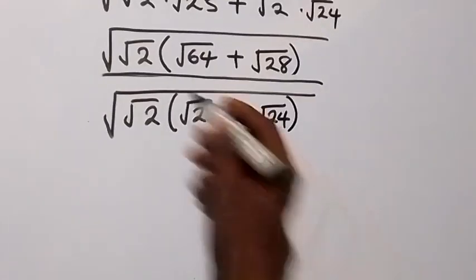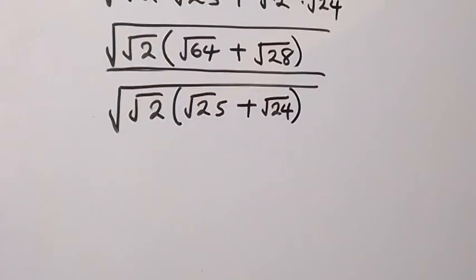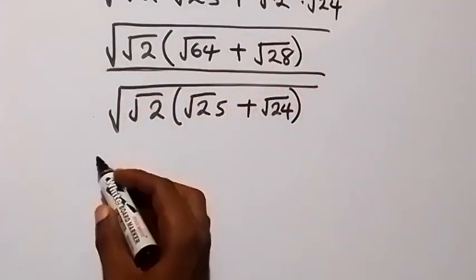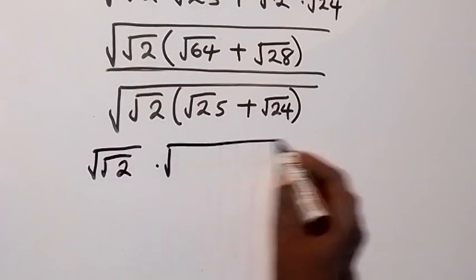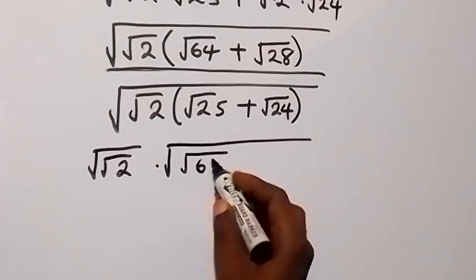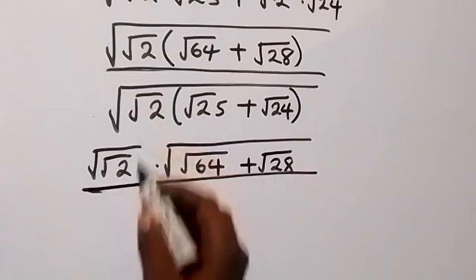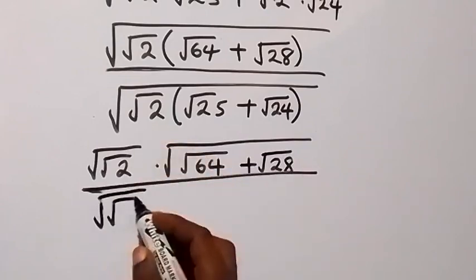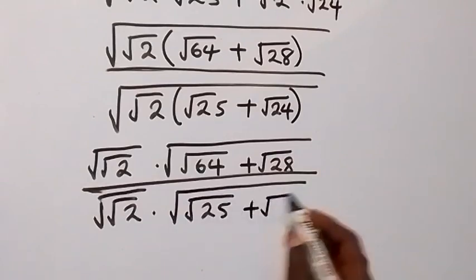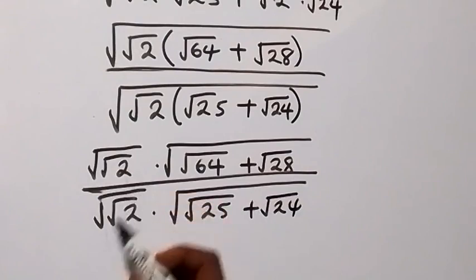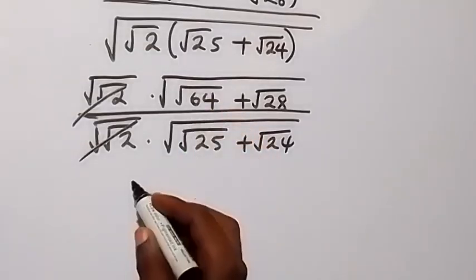From here we can separate this because we have square root of root 2, and this root 2 contains the square root as well. So we can say this is square root of root 2 times square root of root 2 — these root 2 terms cancel out — then we are left with square root of root 64, and root 64 is 8, so we have square root of 8.